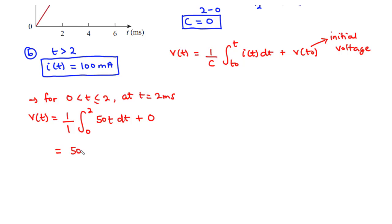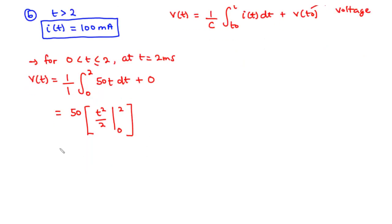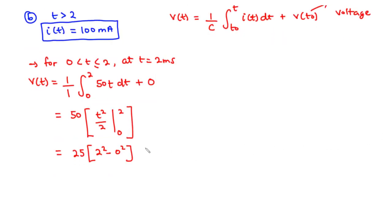We pull out the constant 50 and integrate t with respect to t, giving t²/2 evaluated from 0 to 2, plus zero. This becomes 50 divided by 2, which is 25, times (2² minus 0²) equals 25 times 4 equals 100. So the voltage at t equals two milliseconds is 100 millivolts.